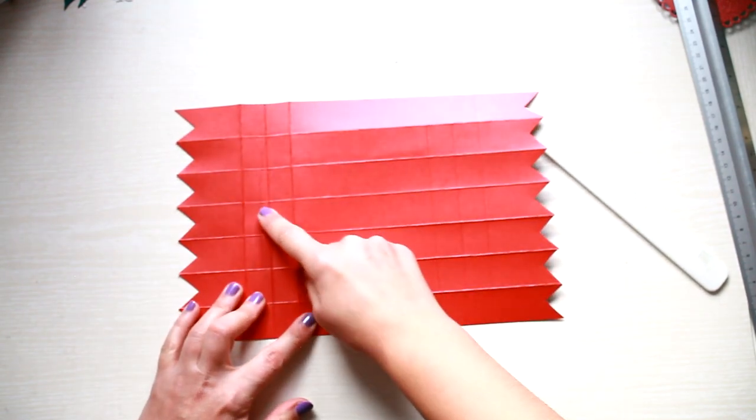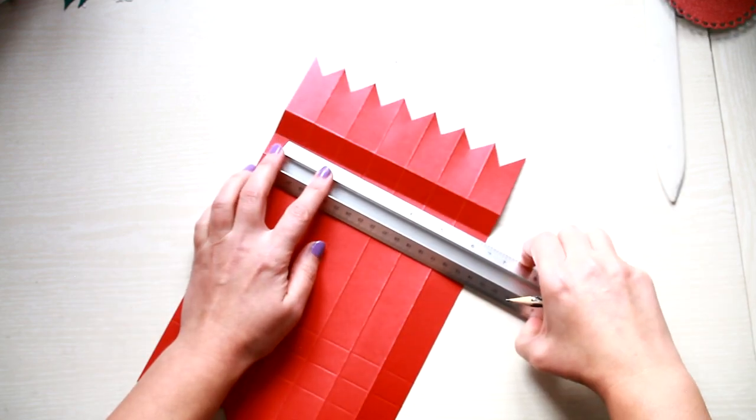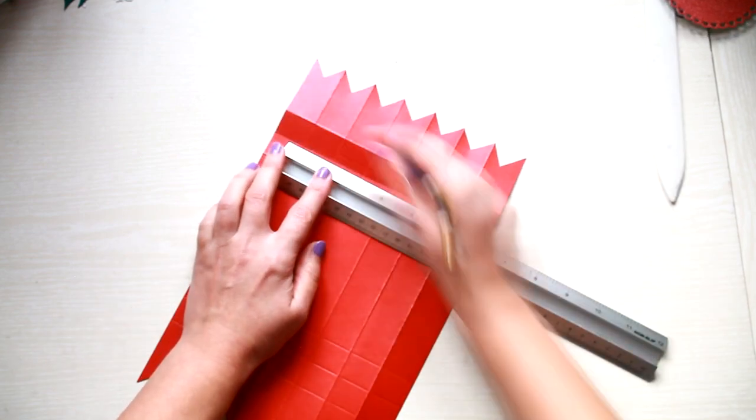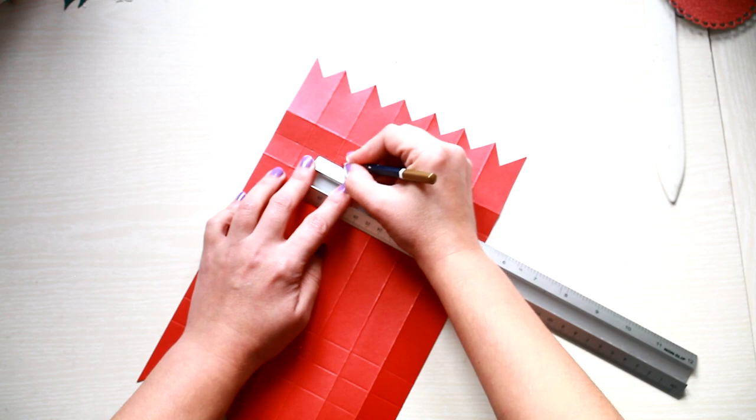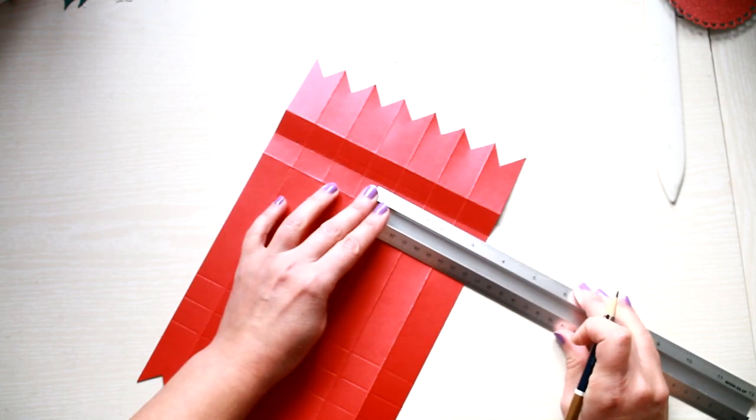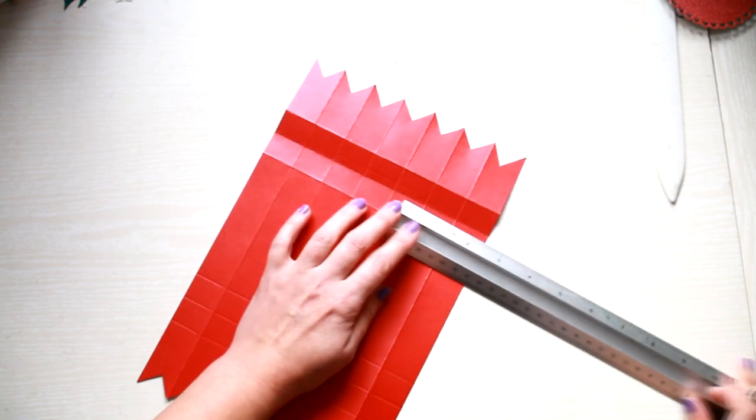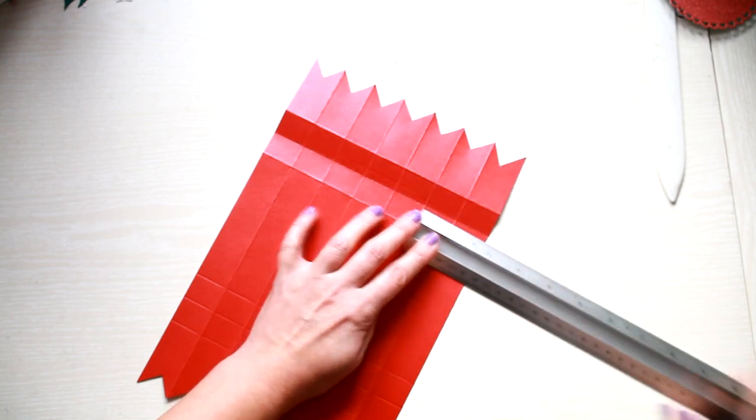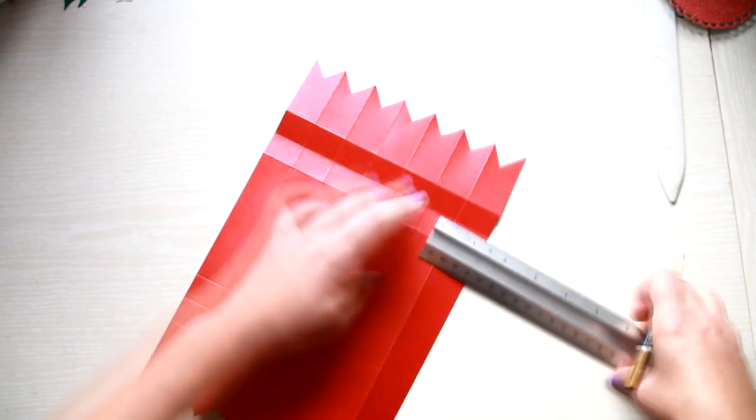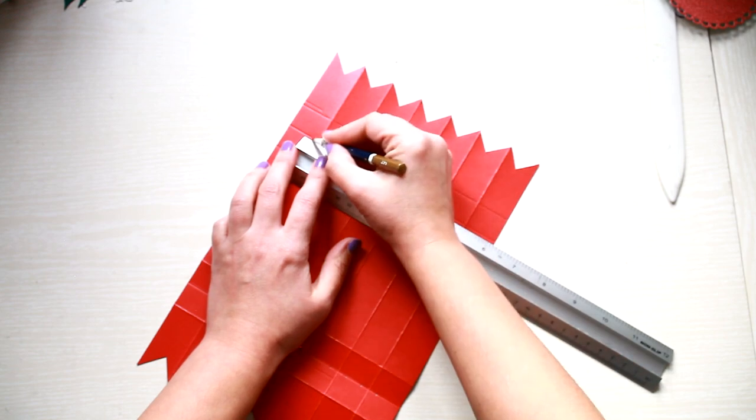There is one more thing to do before assembling the box. You'll need to cut away a few diamond shapes which will help you gather the ends of the box. In order to do so I measured quarter of an inch on each side of the vertical folds.